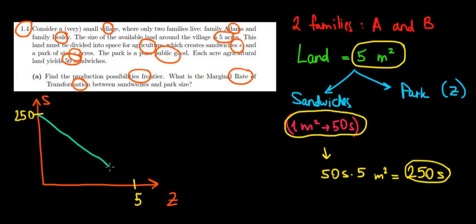We are connecting the two and this will be our production possibilities frontier. Now why is this a straight line? Why isn't it curved? Because the slope is gonna be constant. Every additional meter square...